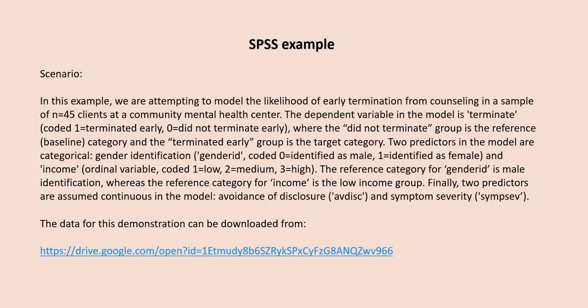In this example, we are attempting to model the likelihood of early termination from counseling in a sample of 45 clients at a community mental health center. The dependent variable is 'terminated,' coded 1 for terminated early and 0 for did not terminate early, where the did-not-terminate group is the reference category. Two categorical predictors are gender identification (0 = male, 1 = female) and income (1 = low, 2 = medium, 3 = high), with male and low income as reference categories. Two continuous predictors are avoidance of disclosure and symptom severity.